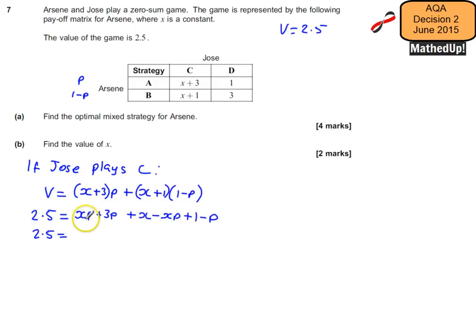3P - P is 2P, and we've got a plus x and a plus 1. So that's fully simplified over here.